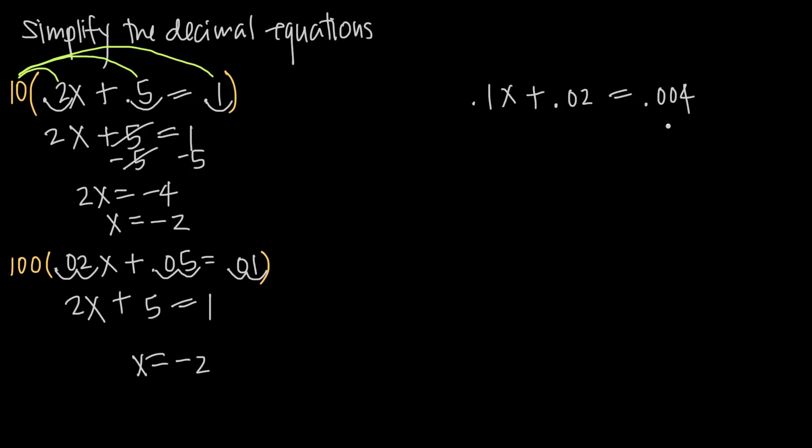Well, the smallest decimal is this .004, this one ends in the thousandths place versus this in the hundredths and this in the tenths place, so in order to make this .004 a whole number, we need to multiply this whole equation by 1,000, so 1,000.